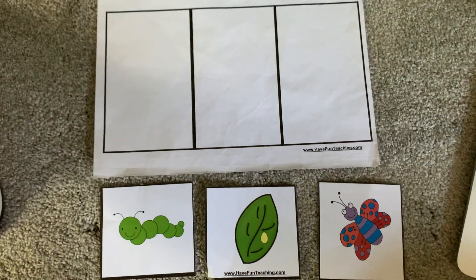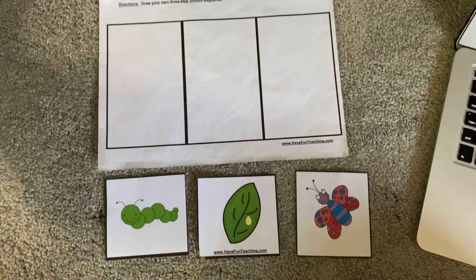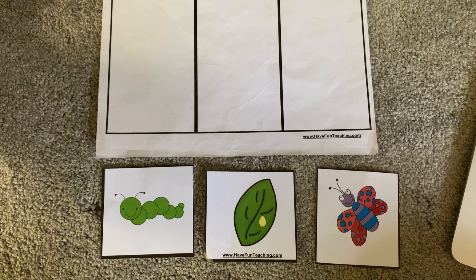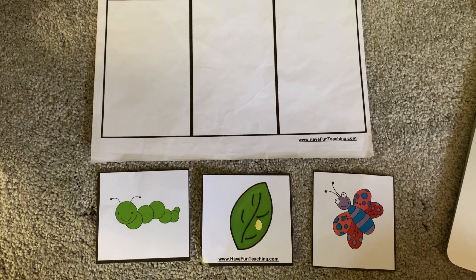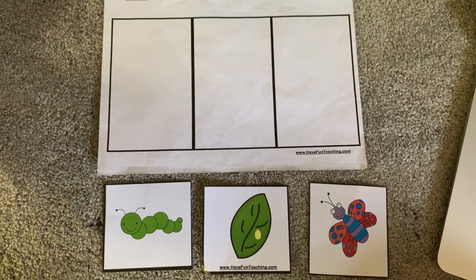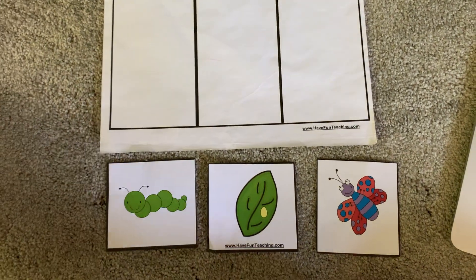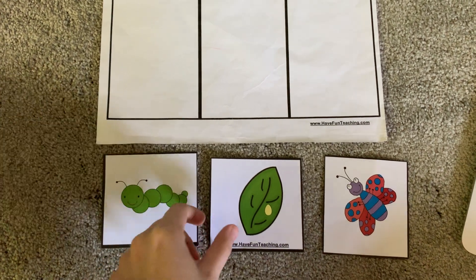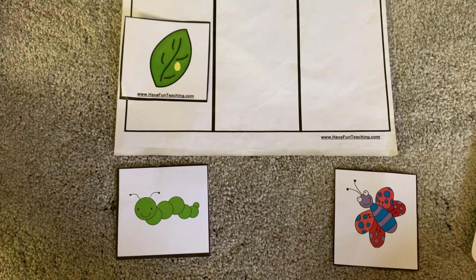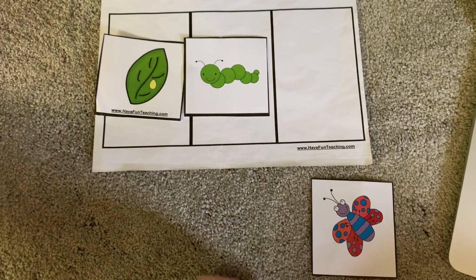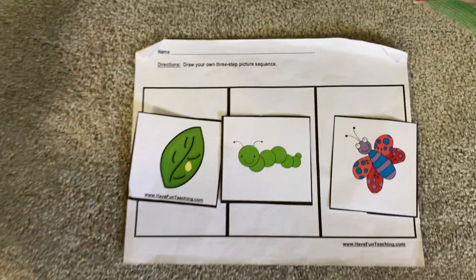All right, we're gonna do our sequencing song. I want you to point to the screen. When you put things in order, it just makes sense — you have first, second, and last, then you have your sequence. When you want a butterfly: first you have the caterpillar, and last you get the butterfly. Good job!